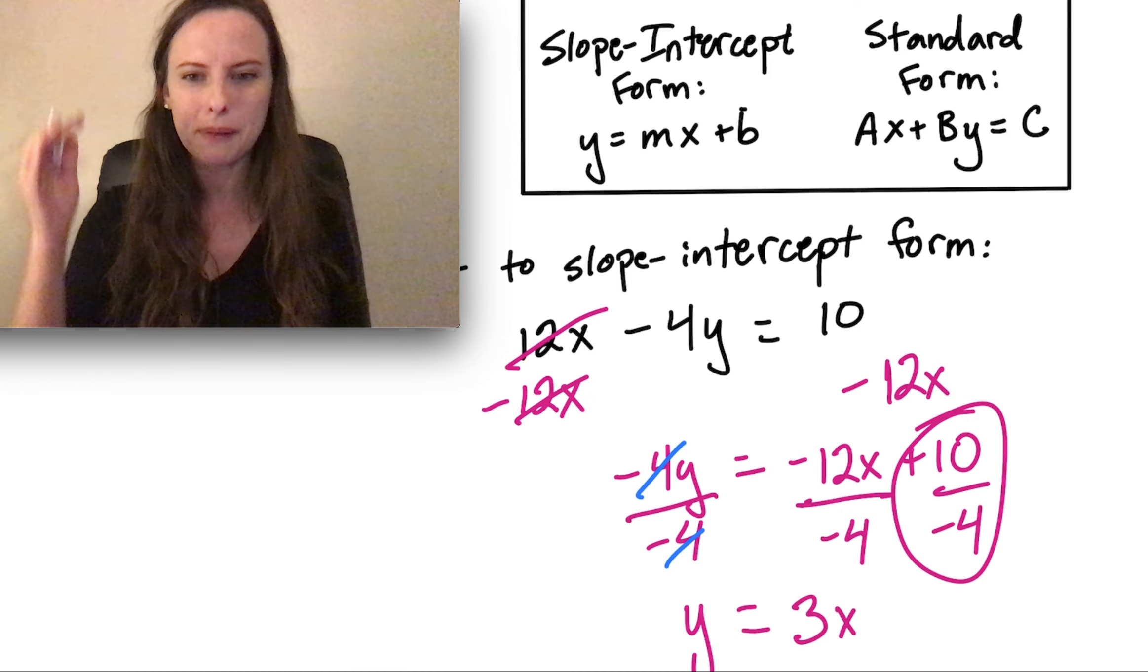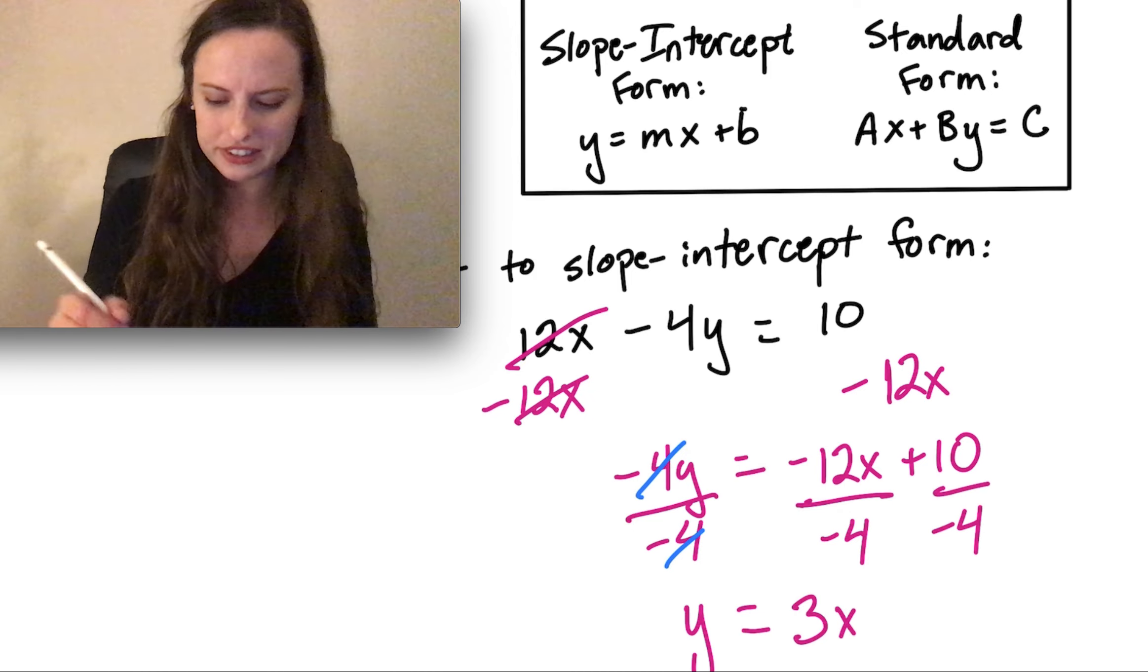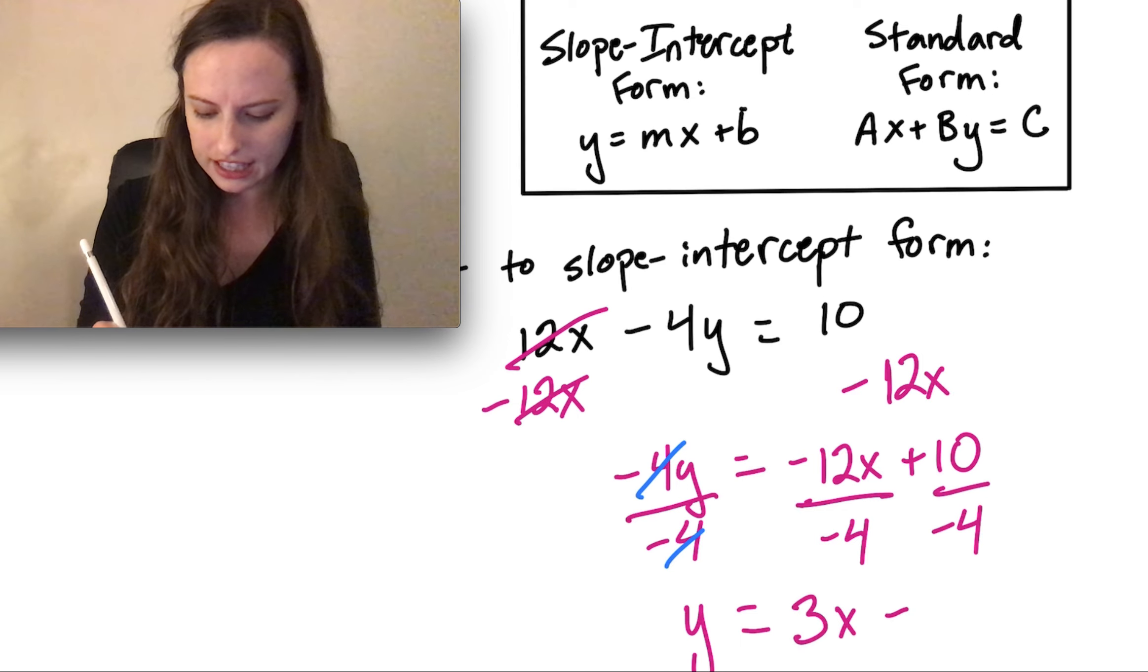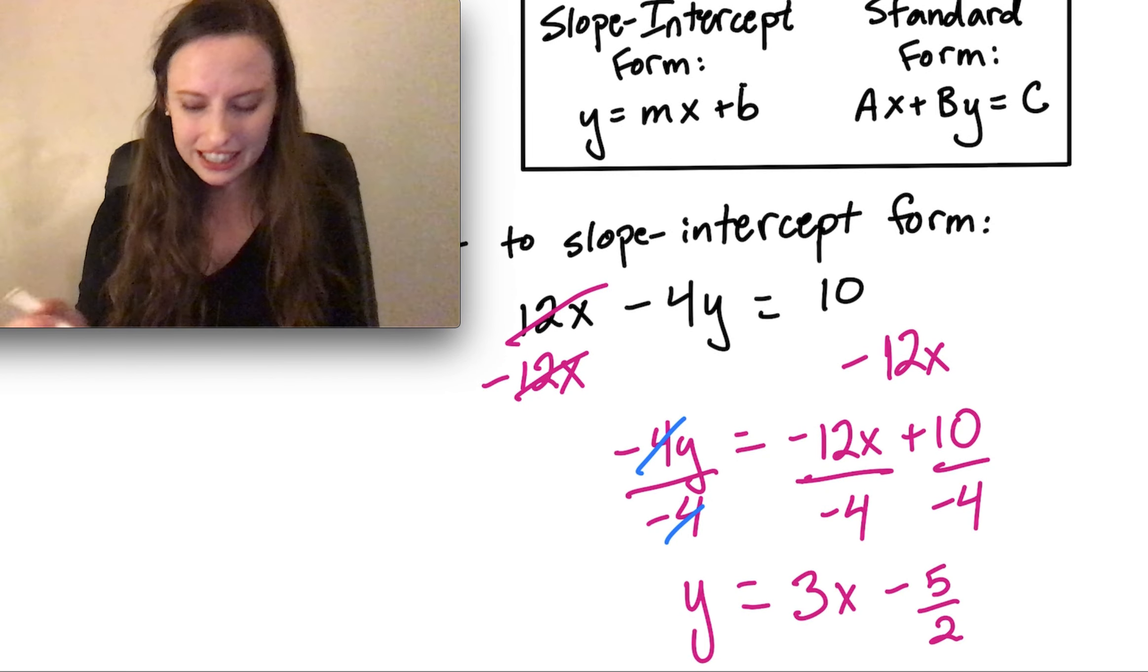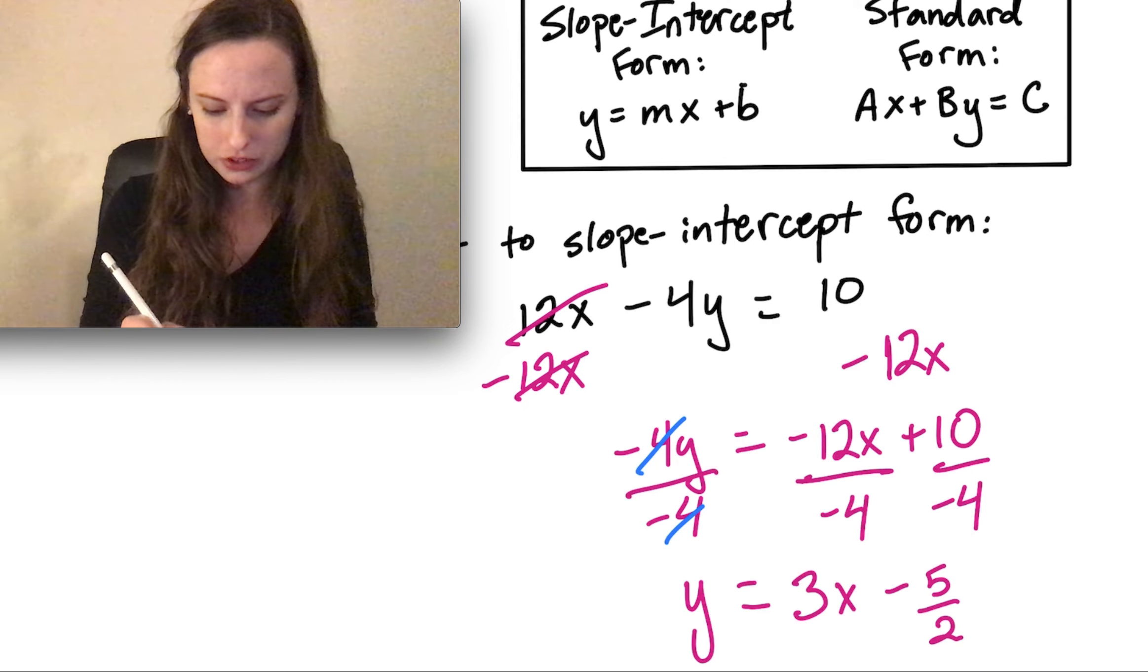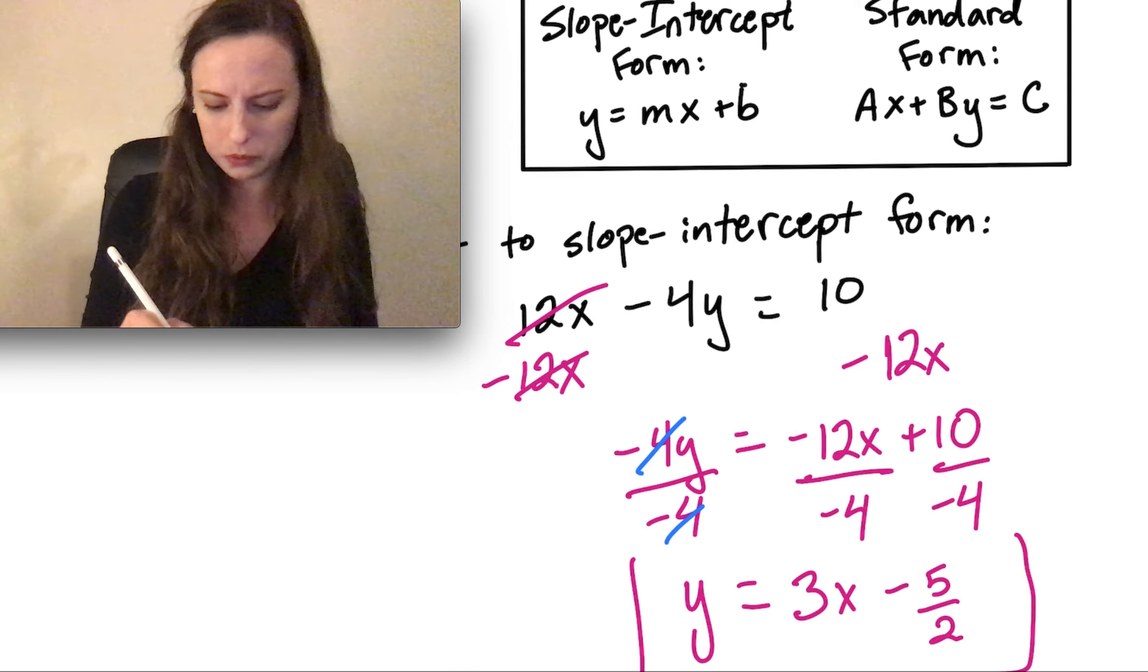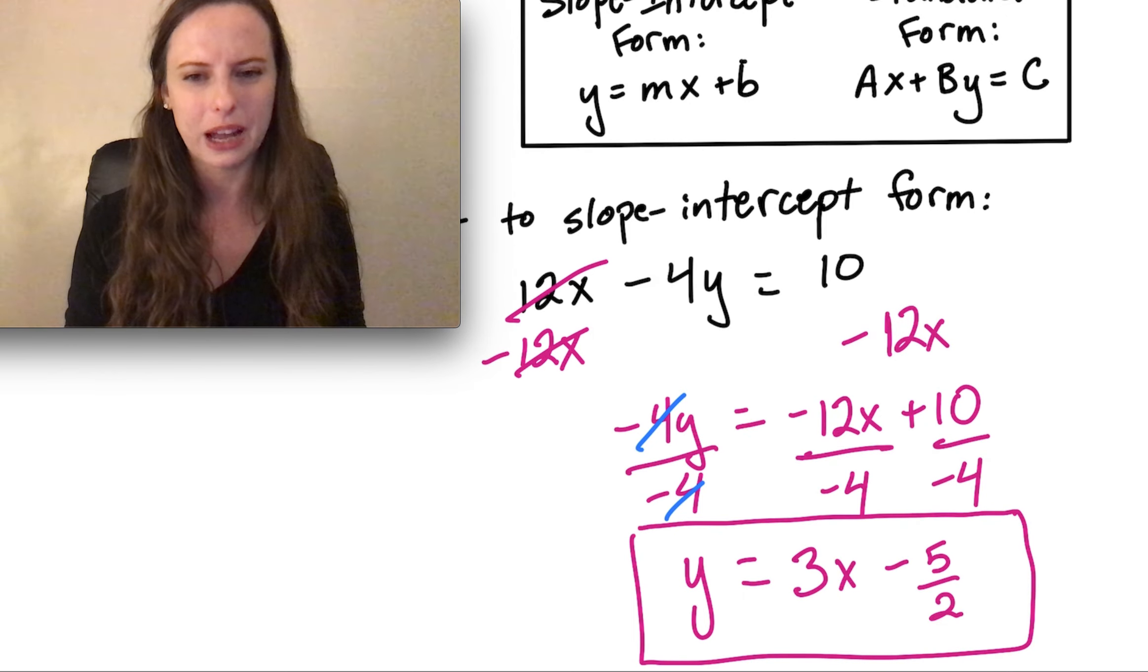Negative 12 divided by negative 4 gives us a positive 3x. And then here we have positive 10 divided by negative 4. That's a fraction that will simplify to negative 5 over 2. That's okay. We can have a y-intercept that is a fraction. So that is okay to get a b-value which is a fraction. There is our final answer for that one.